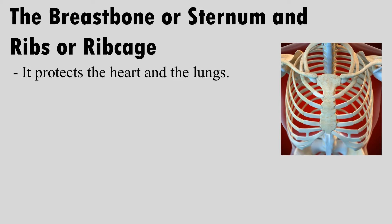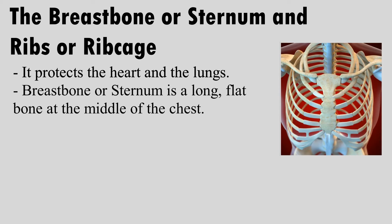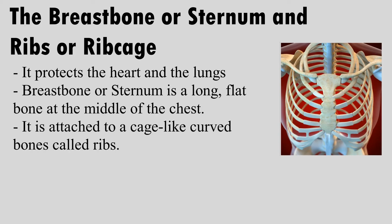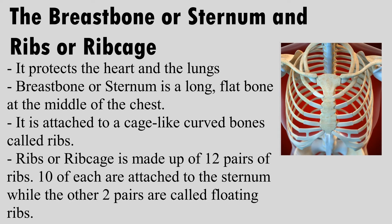The vertebrae are stacked on top of each other and enclose the spinal cord. The breastbone or sternum is a long, flat bone at the middle of the chest. It is attached to a cage-like curved bone called ribs. The ribcage is made up of 12 pairs of ribs; 10 of each are attached to the sternum, while the other two pairs are called the floating ribs.